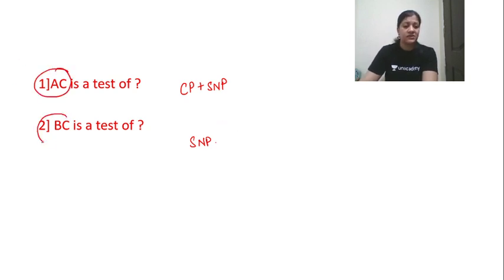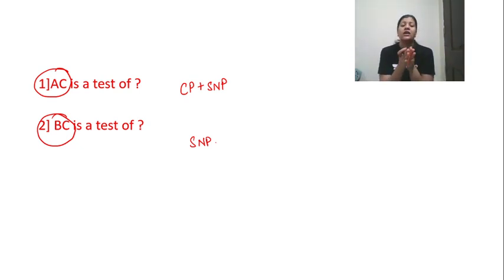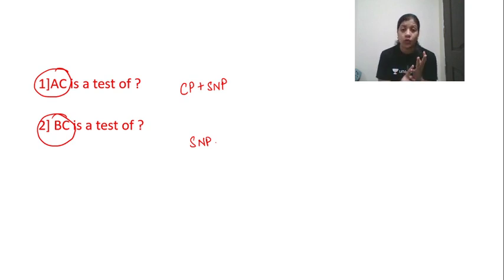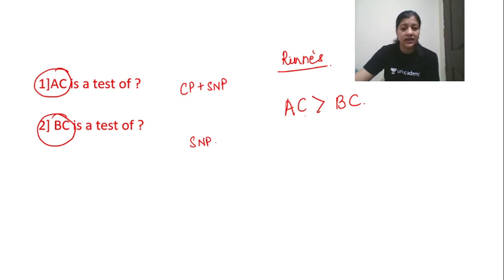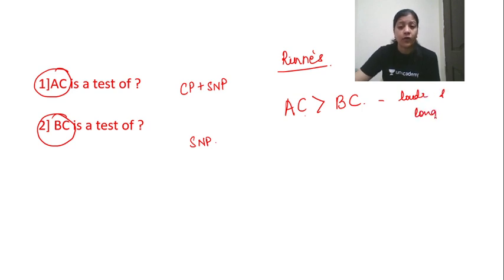When we compare AC versus BC, which should be louder and longer? The AC path is a longer path; the BC path is a shorter path. Sound is heard best in air. So air conduction is louder and longer than bone conduction — AC is greater than BC. This is the principle of Rinne's test. In Rinne's test, AC is greater than BC, meaning air conduction is louder and longer than bone conduction.